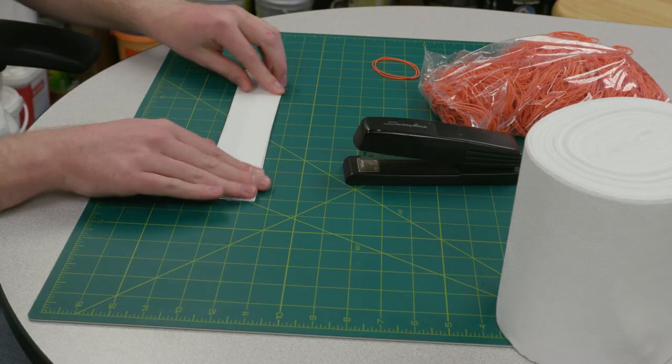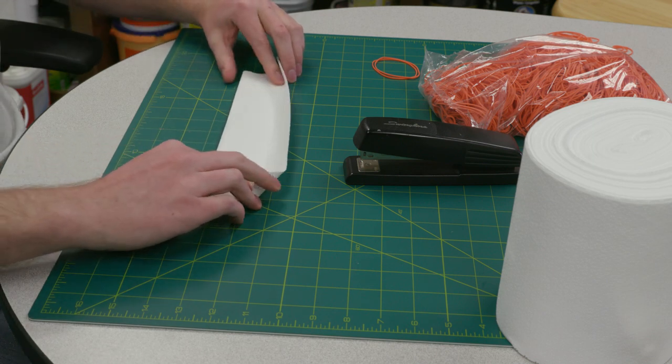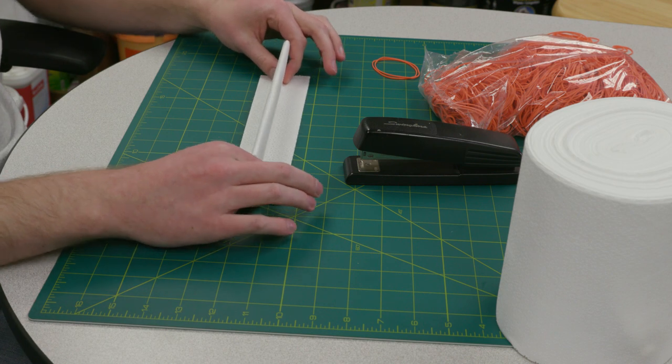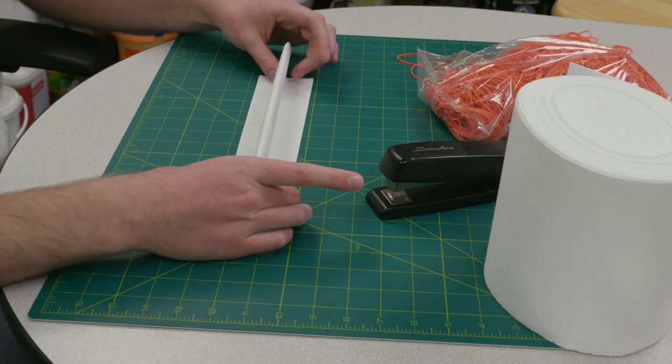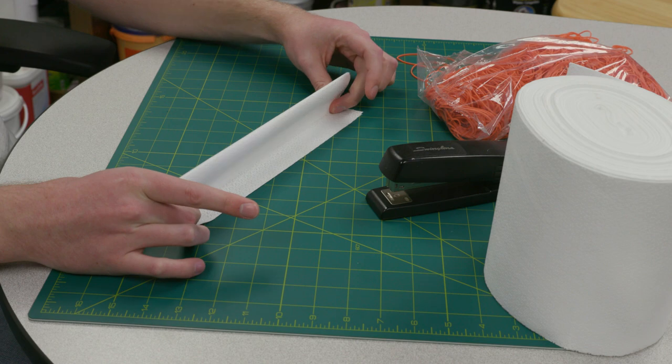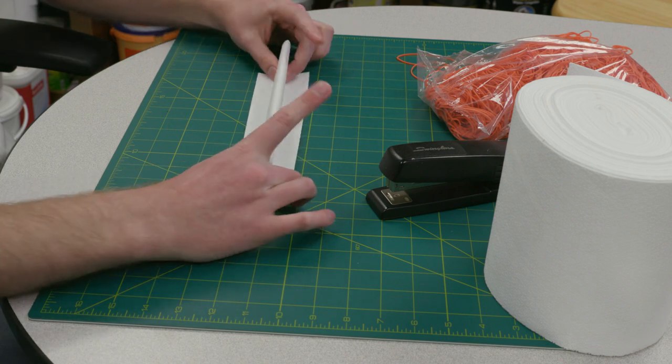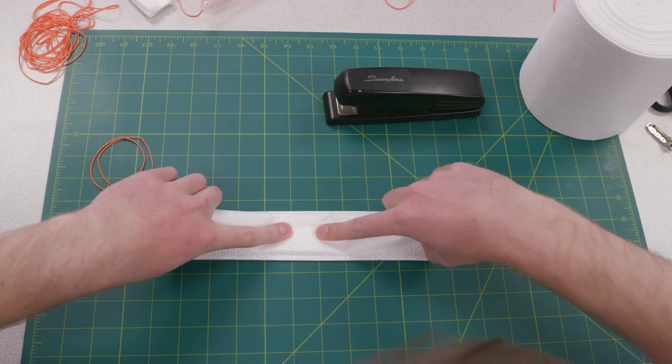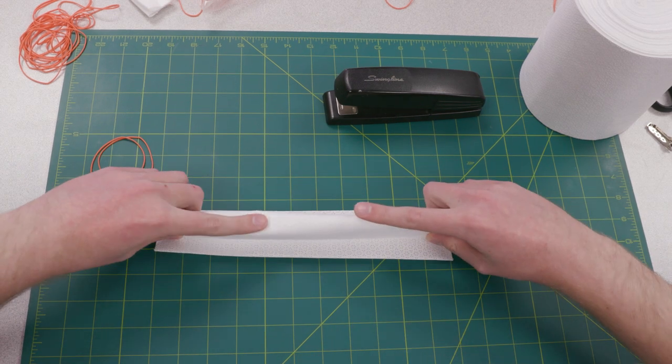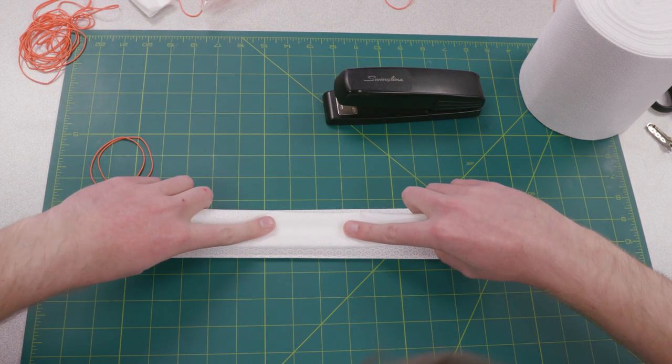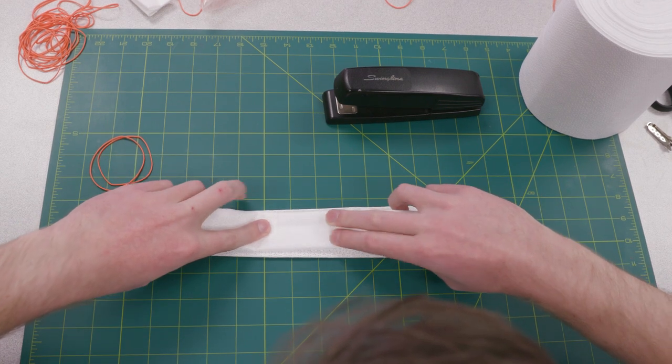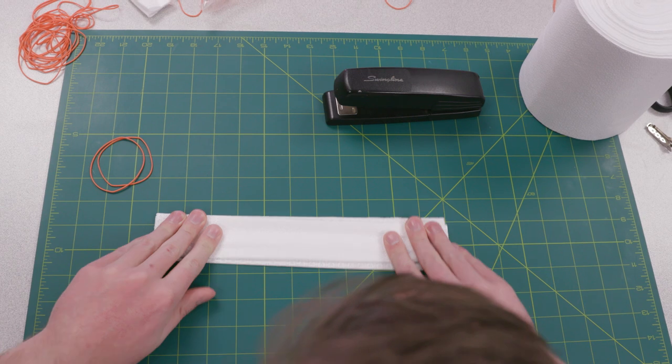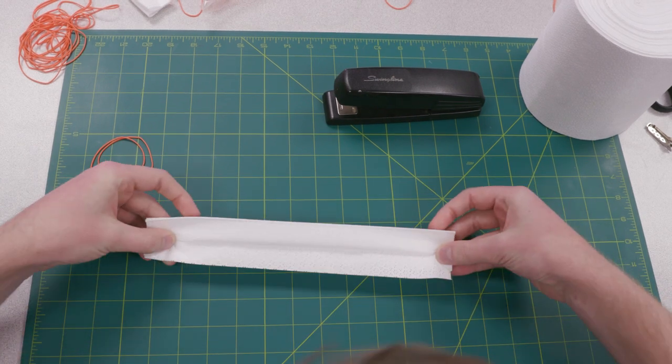So you're going to want to have your fingers go underneath here. And you want it to be an upside down T. While you got your middle finger and your thumb holding the fold in place, you're going to put your index finger down in the center. And you want to make sure that this crease remains in the center as much as possible. And then you flatten it out. Make sure that that's creased. Now you're going to want to flip that over.